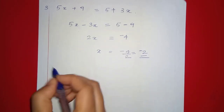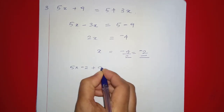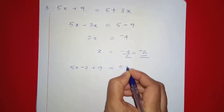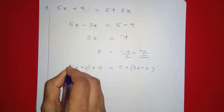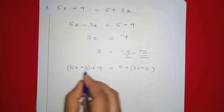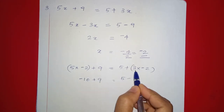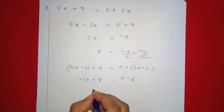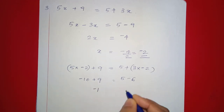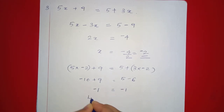We substitute x equals negative 2 into the linear equation: 5 into negative 2 plus 9 equals 5 plus 3 into negative 2. That is negative 10 plus 9 equals 5 minus 6, which gives negative 1 equals negative 1. LHS is equal to RHS.